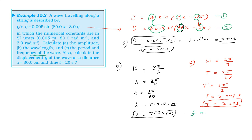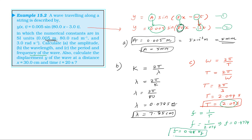The frequency equals 1 divided by the time period. The time period is 2.094 seconds, so the frequency is 1 divided by 2.094, which equals 0.4774. Rounding up, the frequency is 0.48 hertz.